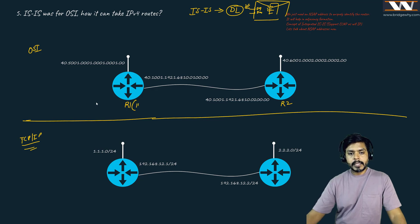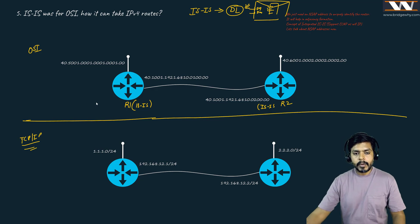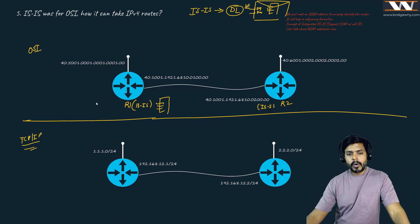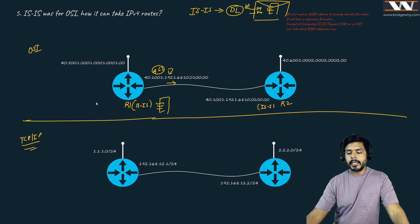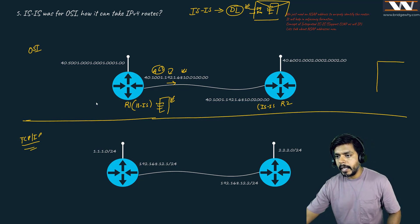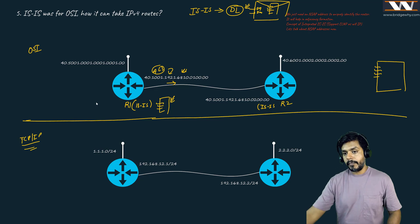If I have routers R1 and R2 with ISIS routing protocol enabled, and ISIS creates any message - a hello message or whatever - and I want to send this message on an interface, then whatever alien-looking Layer 3 address I have configured here doesn't matter. ISIS messages can be delivered using the data link layer directly without using those Layer 3 addresses.